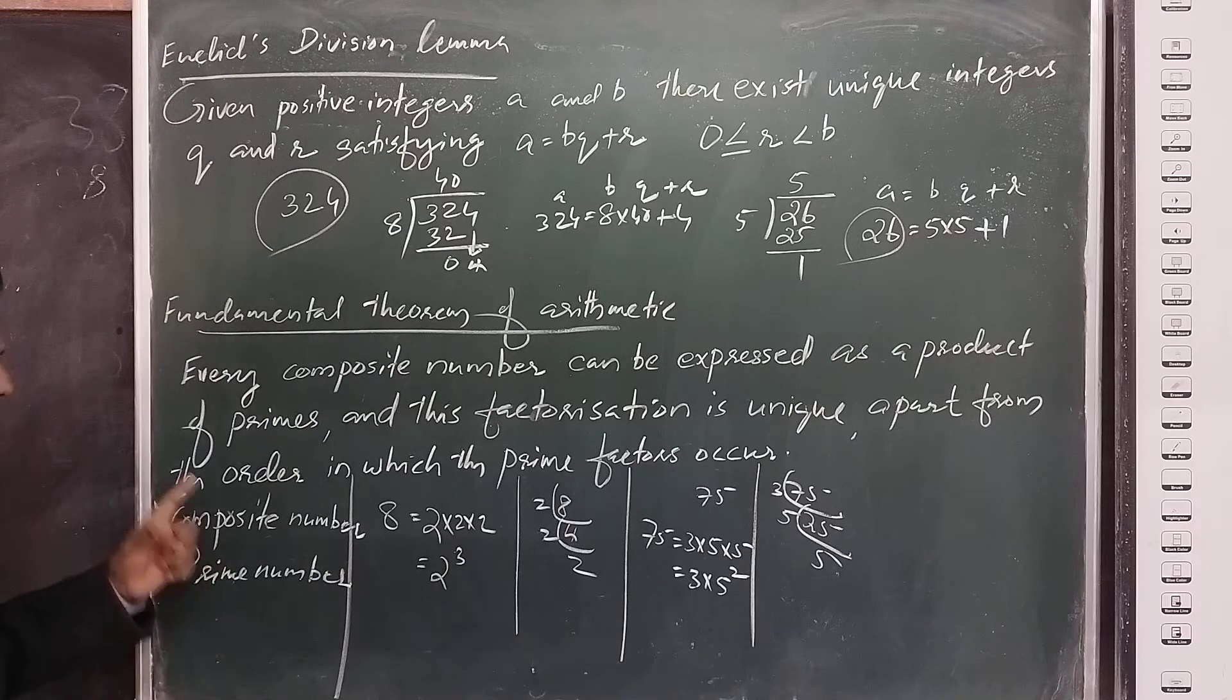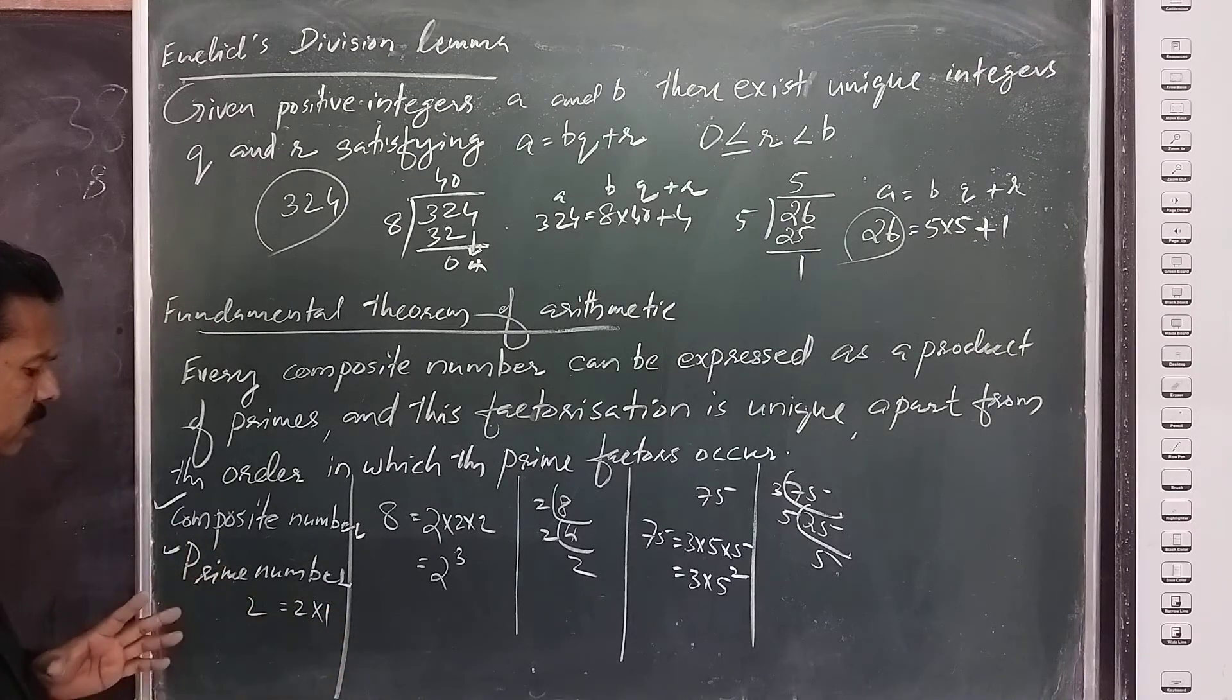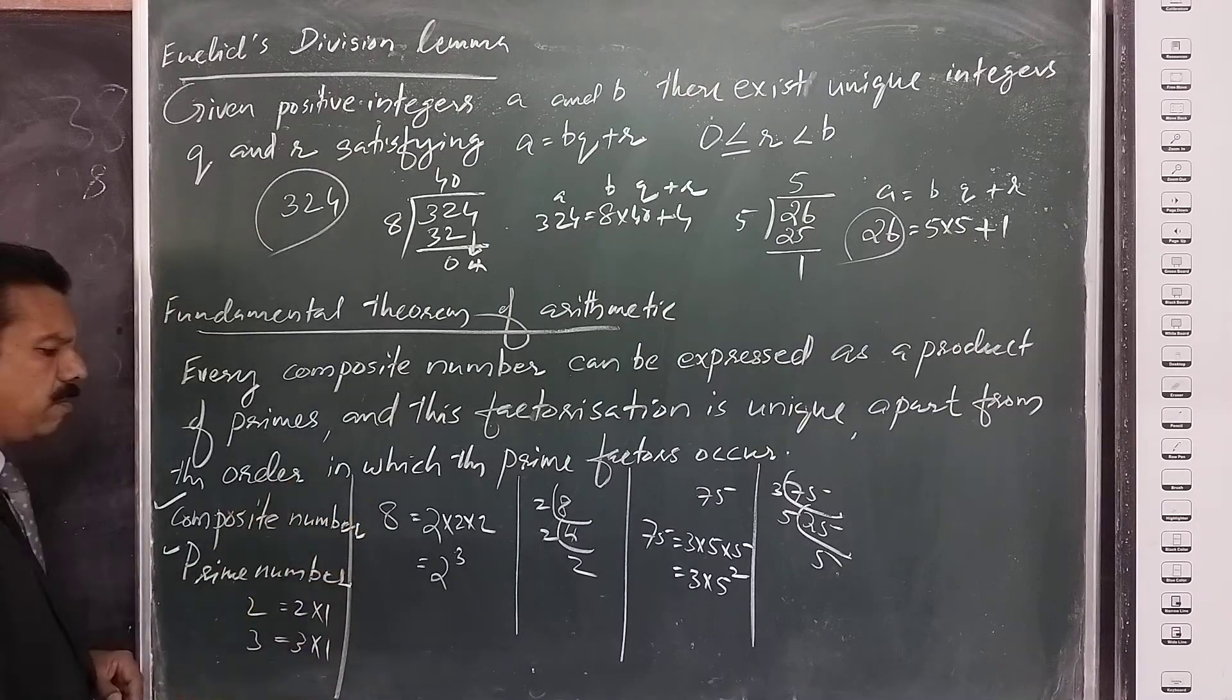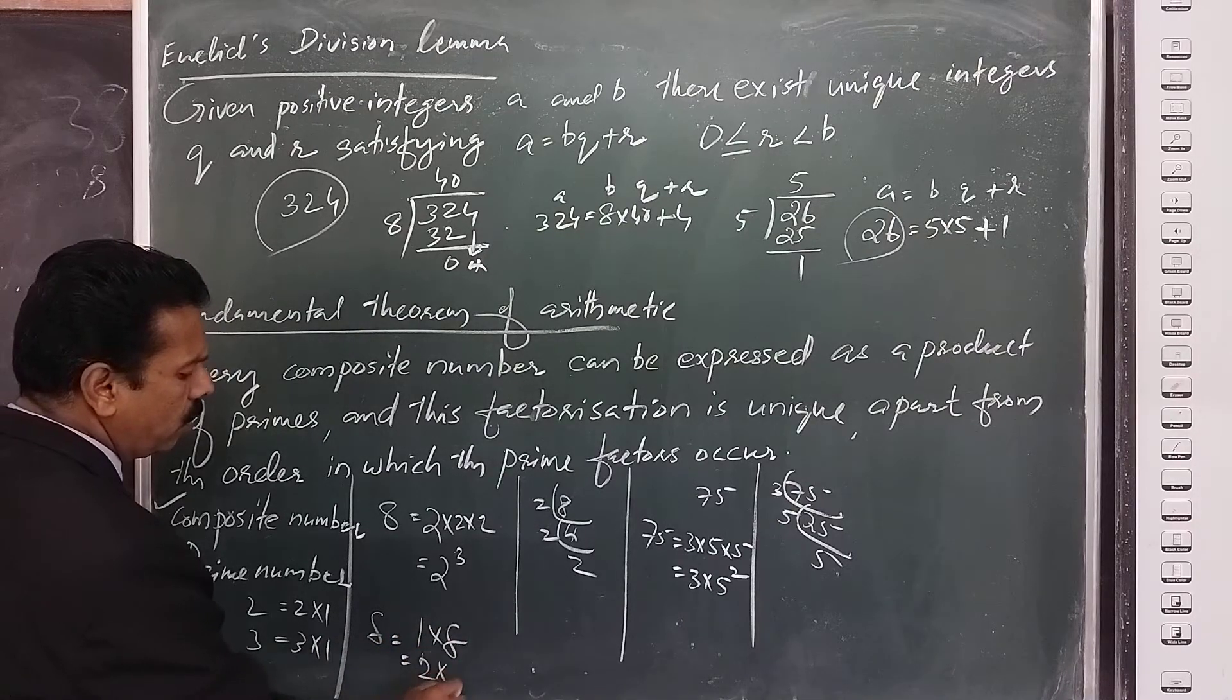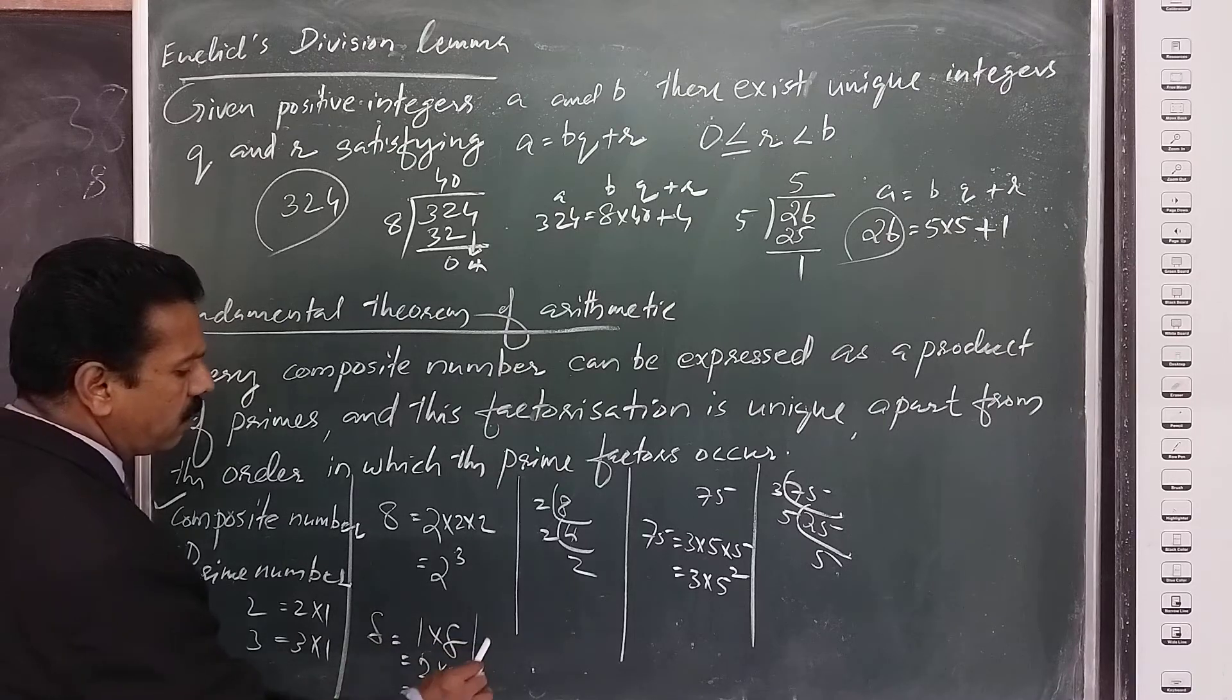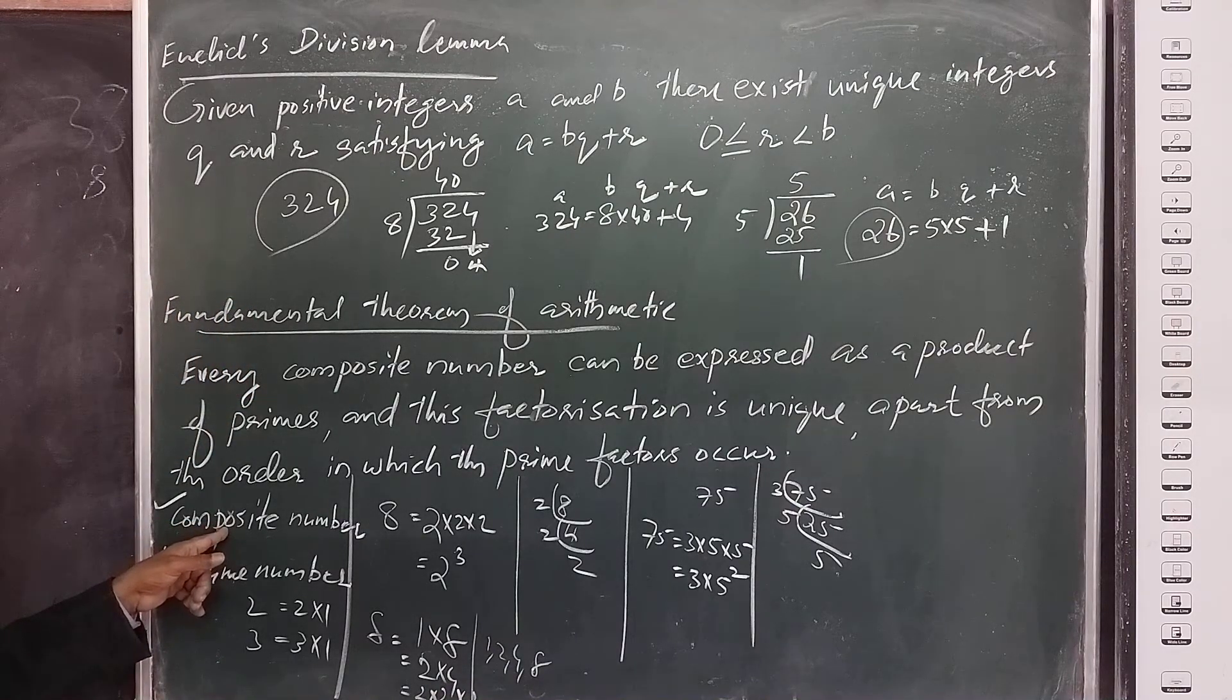First you have to study what is a prime number and what is a composite number. Prime numbers have only two factors. For example, 2: you can write 2 into 1, only two factors—the number itself and 1. Then 3, another prime number: 3 into 1 or 1 into 3. But composite number 8 can be written as 1 into 8, 2 into 4, 2 into 2 into 2, in different ways. Not only one factorization—the factors are 1, 2, 4, 8. More than two factors. Such numbers are called composite numbers.